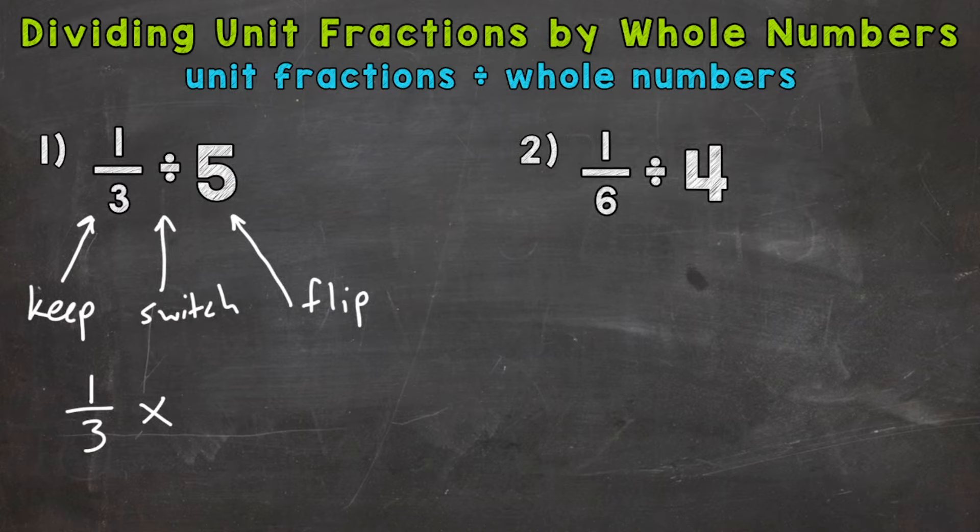So let's flip it. How do we flip a whole number 5? Well, we need to create a fraction out of that whole number. You can put any whole number over 1 and make it into a fraction. So we need to flip, and the 1 is going to be our numerator or top number, and the 5 is going to be our denominator or bottom number. So we get 1 fifth. Again, keep, switch, and flip.